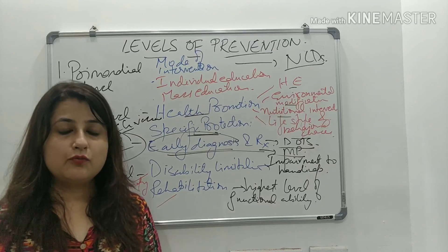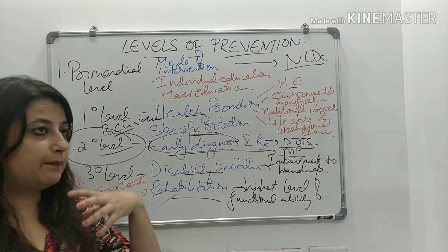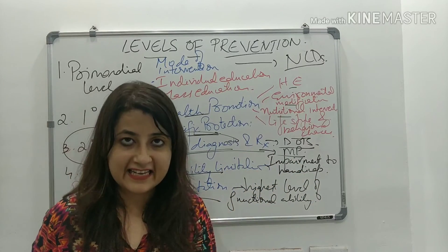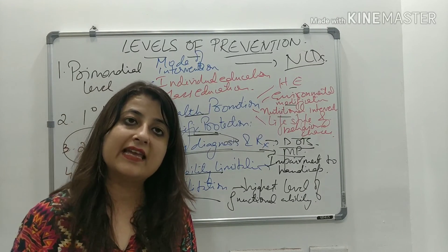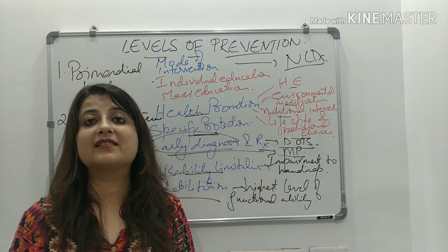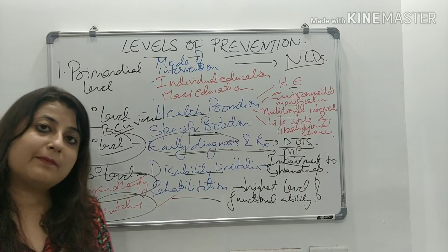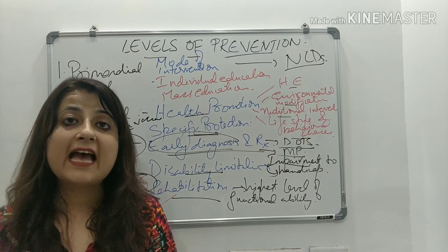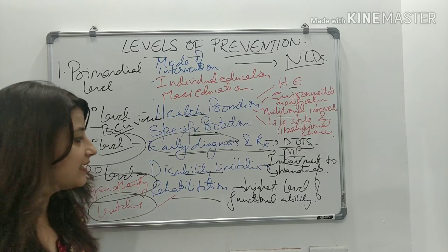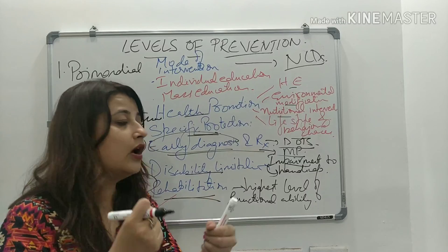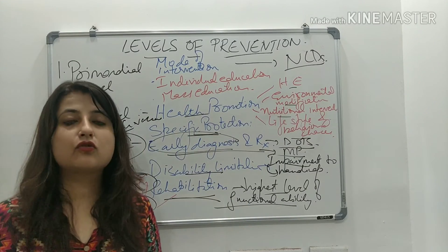What is tertiary level? The two modes of intervention are disability limitation and rehabilitation. Disability limitation is when you try to prevent the progression of disease from impairment to handicap — for example, doing physiotherapy for a person with polio to prevent further weakening of muscles. However, if we provide crutches to a person with polio, that becomes rehabilitation, because you are enabling the person to walk — training them to attain the highest level of functional ability.